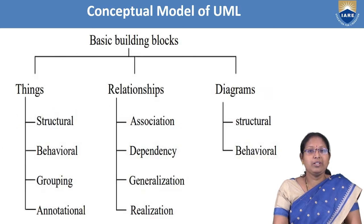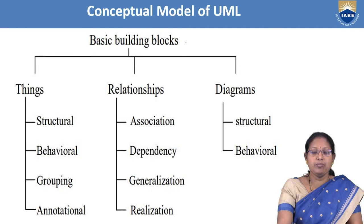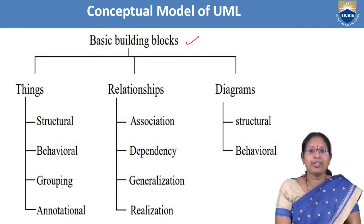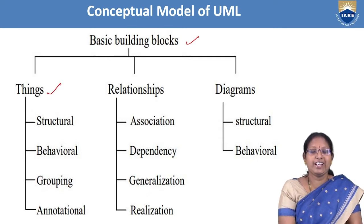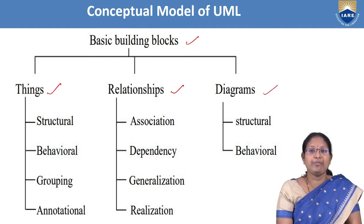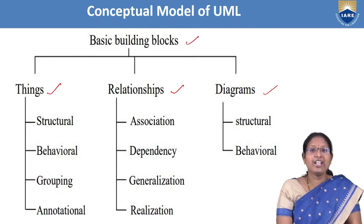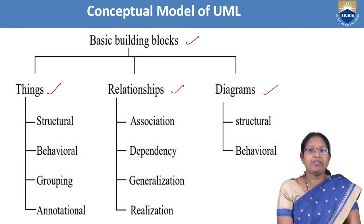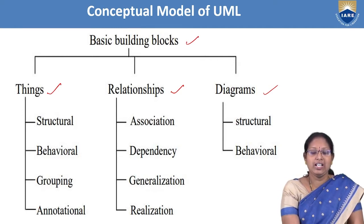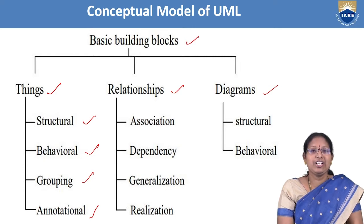Under the conceptual model of UML, the first element is basic building blocks. Under basic building blocks, there are three elements: things, relationships, and diagrams. Things are the most common basic building block and are divided into four kinds: structural things, behavioral things, grouping things, and notational things.